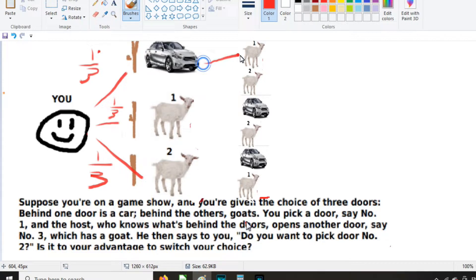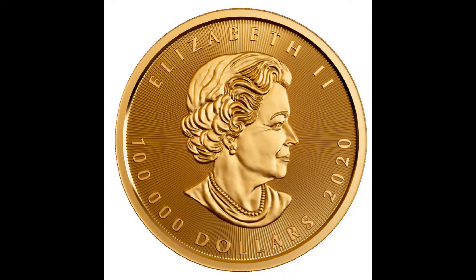Now in the event that you pick a car, there's a one-sixth chance that the host will reveal goat number one, and a one-sixth chance he'll reveal goat number two. If you pick goat number one, there's a one-sixth chance he'll reveal the car, and a one-sixth chance he'll reveal goat number two. And this is a possibility.